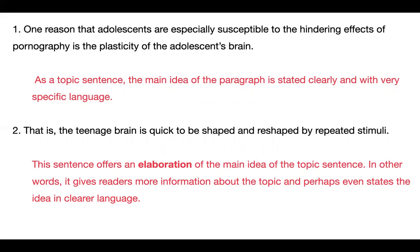Now look at sentence two: 'That is, the teenage brain is quick to be shaped by repeated stimuli.' This sentence offers what's called an elaboration — it elaborates to give more specifics. So it offers an elaboration of the main idea of the topic sentence. In other words, it gives readers more information about the topic and perhaps even states the idea in clearer language. Notice the phrase 'that is' — it's saying 'here's another way of saying it.' That second sentence explains a little further and a little clearer what the first sentence says. That's called an elaboration sentence, and it's really good to do that — explain your idea further.